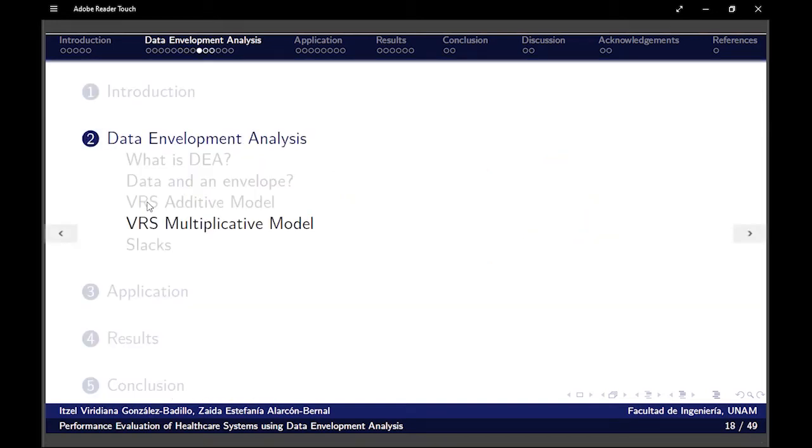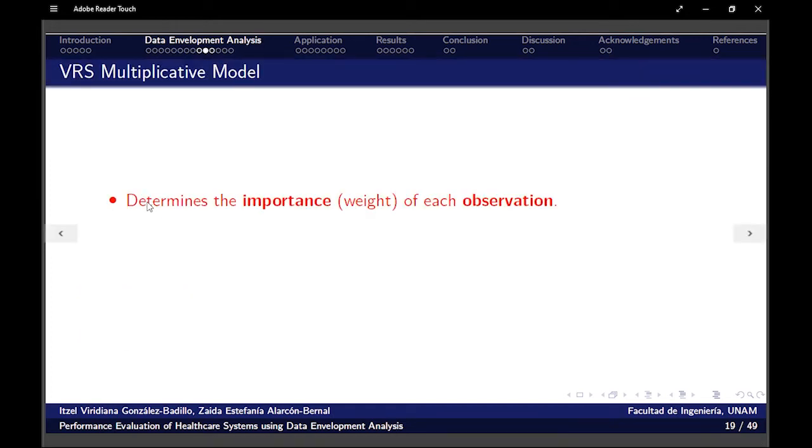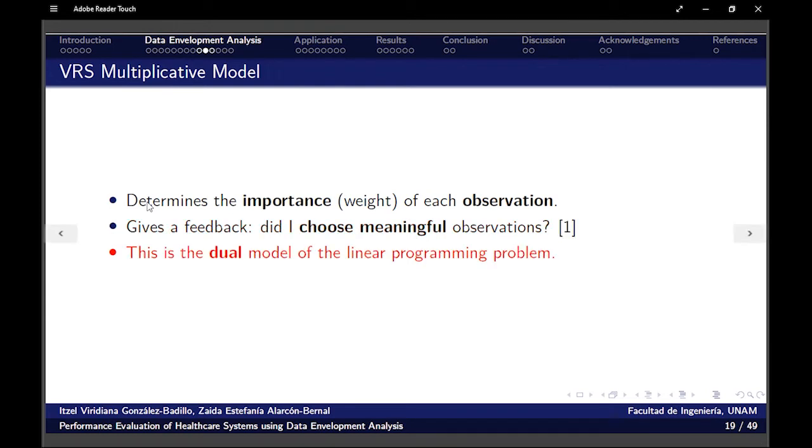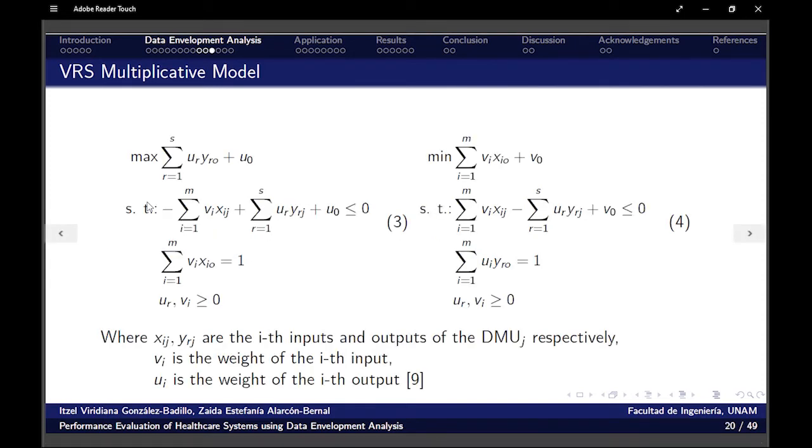So now is the multiplicative model. It determines the importance or weight of each observation so I can have a feedback. Did I choose meaningful observations? Should I take out some? Should I add some more variables? And this is the dual model of the linear programming problem. So if I solve the other one, I'm going to take this information. Here is the formulation where letter V is for the weight of the input and letter U is for the outputs.